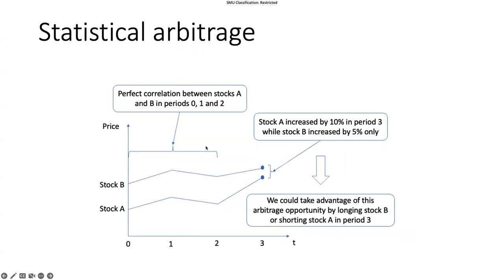Let's look at one example. We have two stocks, with stock price on the vertical axis and time on the horizontal axis, for a total of four time points. In the first three time points, their movements are exactly the same — we observe perfect correlation between stock A and B in periods 0, 1, and 2. However, at time period 3, things start to deviate: stock A increased by 10%, while stock B increased only by 5%.